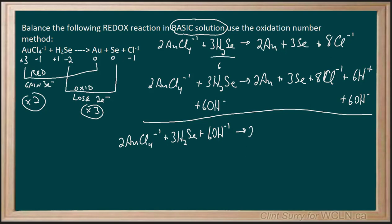Giving us 2 Au plus 3 Se plus 8 Cl minus one, plus, now I'm going to combine the hydrogen and hydroxide to make six water. And this is our balanced redox reaction in basic solution using the oxidation number method.